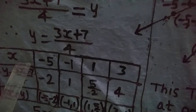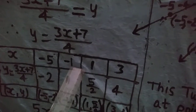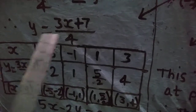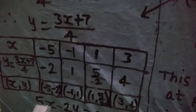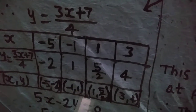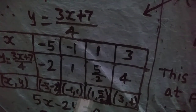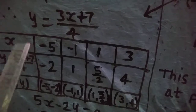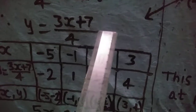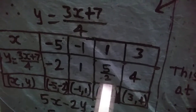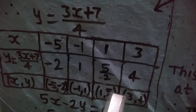When x = -1: y = (3×(-1) + 7) / 4 = (-3 + 7) / 4 = 4/4 = 1. So the point is (-1, 1). When x = 1: y = (3×1 + 7) / 4 = 10/4 = 5/2. So the point is (1, 5/2).